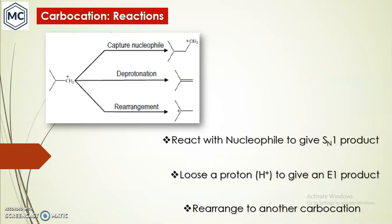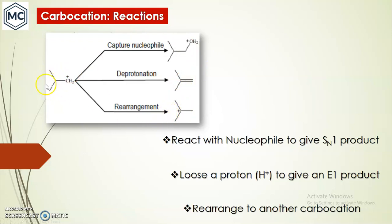Finally, the reactions of carbocations. There are three typical reactions: First, capture by a nucleophile — the nucleophile attacks the carbocation to form a substituted product (SN1 reaction). Second, deprotonation — loss of a proton gives an elimination product (E1 reaction). Third, rearrangement — a 1,2-alkyl or hydride shift can convert a less stable carbocation into a more stable one; for example, a primary carbocation can rearrange via a 1,2-hydride shift to form a more stable tertiary carbocation.